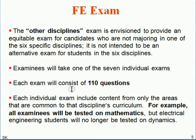The FE Other Disciplines exam is meant for those who do not fit in one of the six specific categories. Each examinee takes one of the seven individual exams. There are a total of 110 questions. Depending on your discipline, some topics will not appear — for example, civil engineers will not be asked questions on thermodynamics.